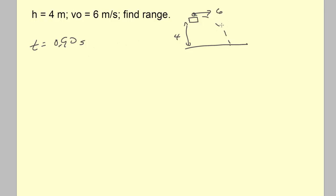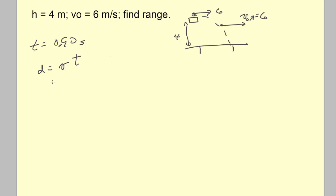The horizontal component of velocity never changes — it starts at 6 and stays at 6. So the range is just the displacement of an object moving to the right at 6 m/s for 0.9 seconds. That distance equals velocity times time, no acceleration: 6 × 0.9 = 5.4 meters.